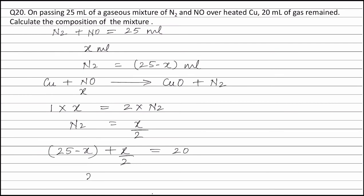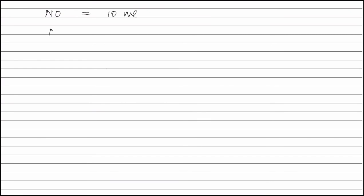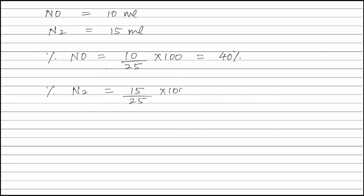Solving this, we get x = 10 ml. Therefore, the volume of nitric oxide is 10 ml and the volume of nitrogen is 15 ml. The percentage of nitric oxide is (10/25) × 100 = 40%, and the percentage of nitrogen is (15/25) × 100 = 60%.